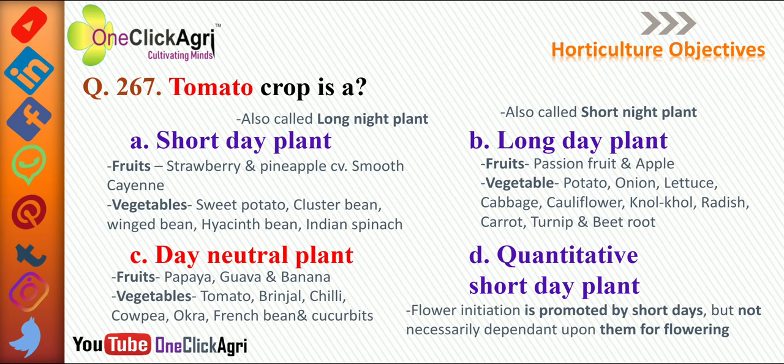The other three options: Short day plants — also known as long night plants — include fruits like strawberry and pineapple (mostly the smooth cayenne cultivar), and vegetables like sweet potato, cluster bean, winged bean, hyacinth bean, and Indian spinach. Long day plants — also known as short night plants — include fruits like passion fruit and apple, and vegetables like potato, onion, lettuce, cabbage, cauliflower, kohlrabi, radish, carrot, turnip, and beetroot.